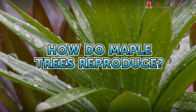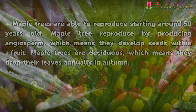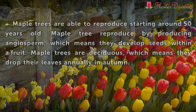How do maple trees reproduce? Maple trees are able to reproduce starting around 50 years old. Maple trees reproduce by producing angiosperm, which means they develop seeds within a fruit. Maple trees are deciduous, which means they drop their leaves annually in autumn.